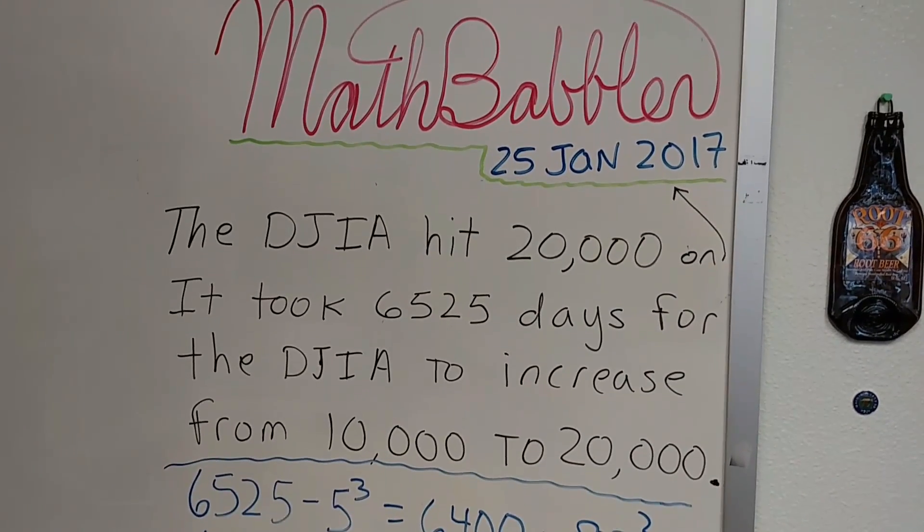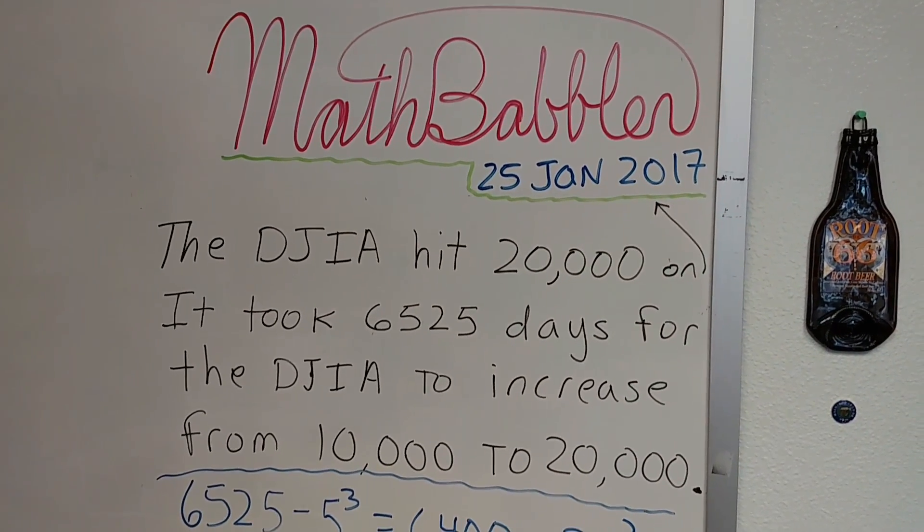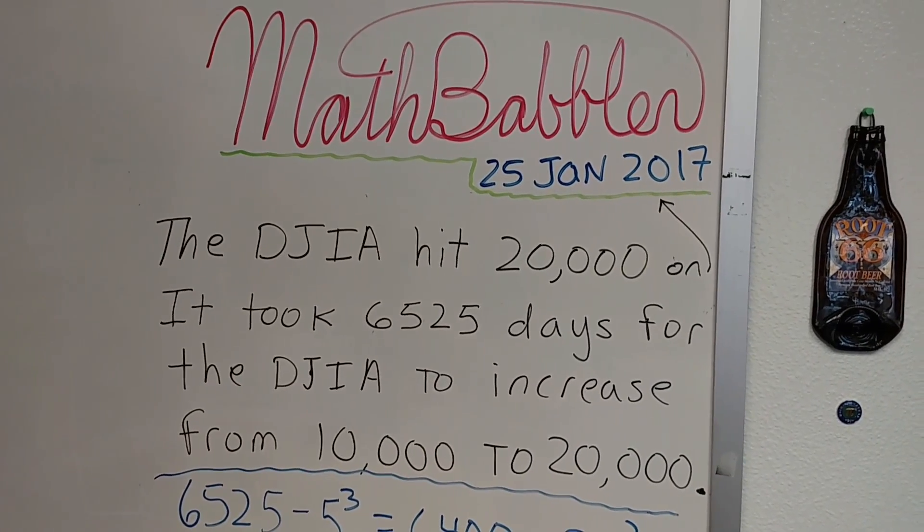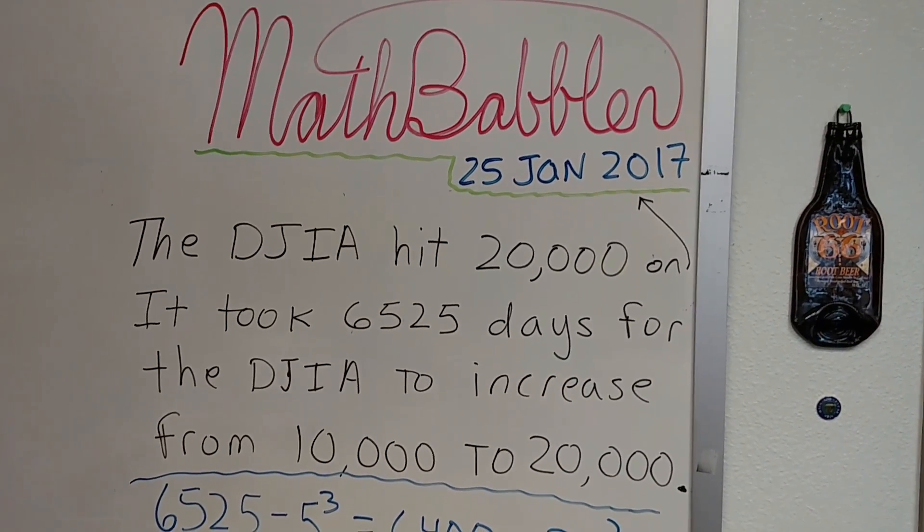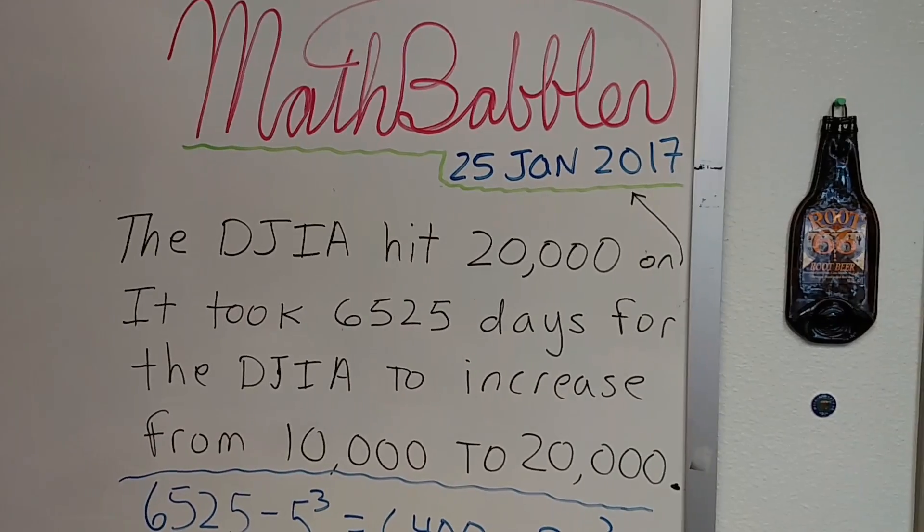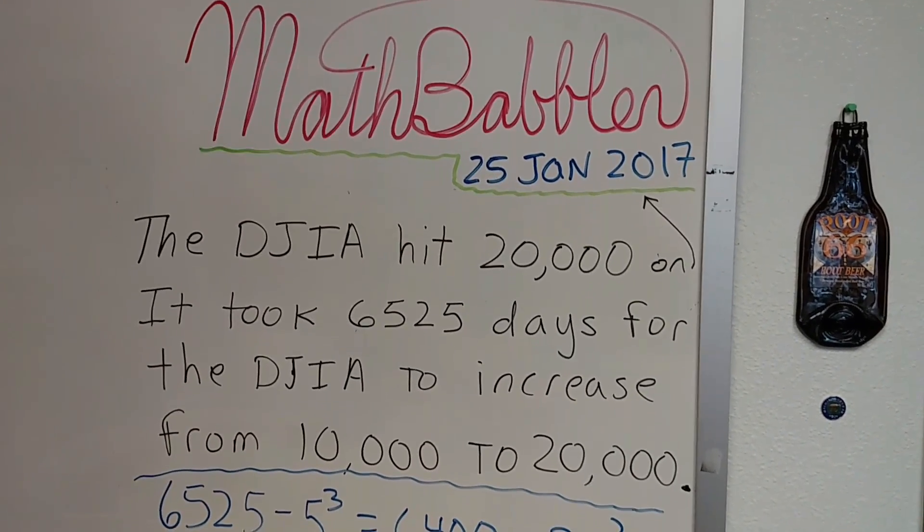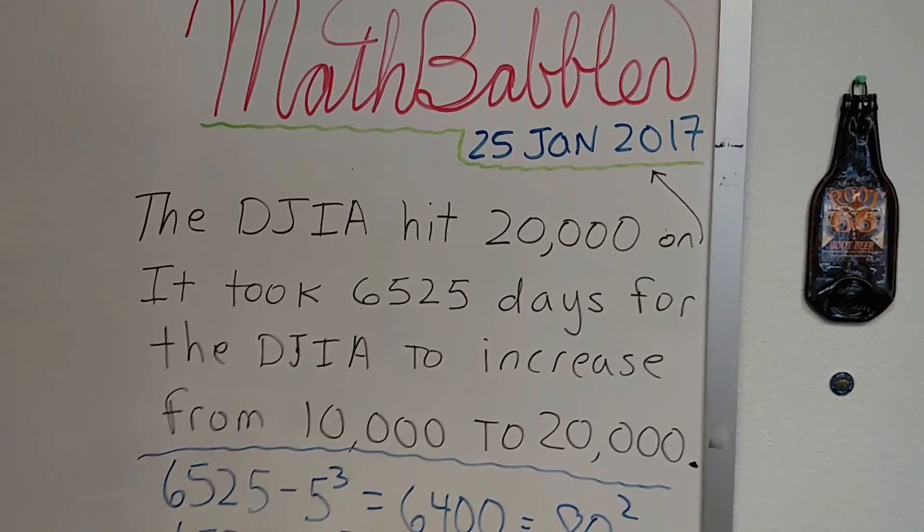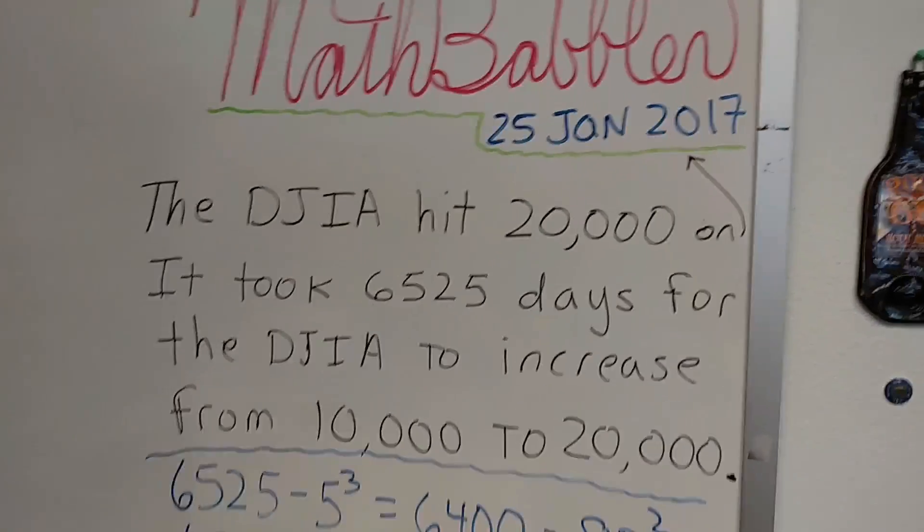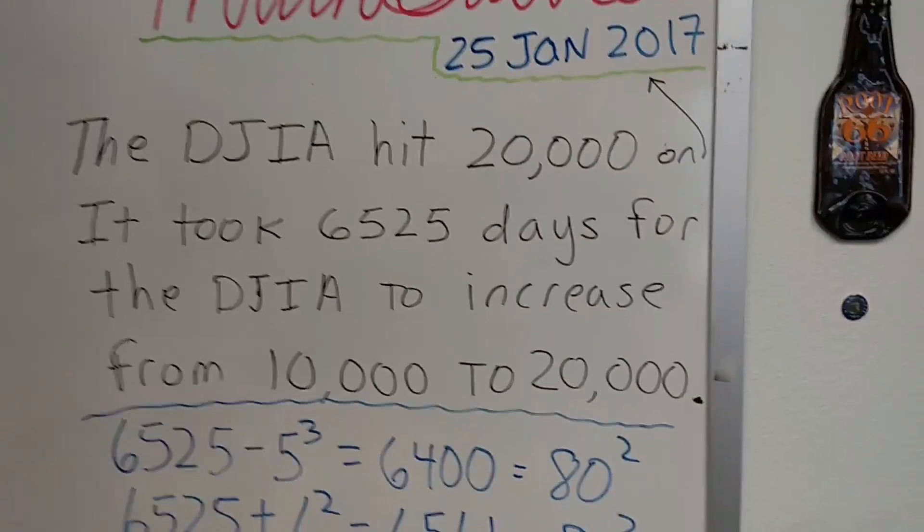It took 6,525 days for the Dow Jones Industrial Average to increase from 10,000 to 20,000. In other words, it took almost 18 years for it to double. Well, the number 6,525 has some interesting math behind it.